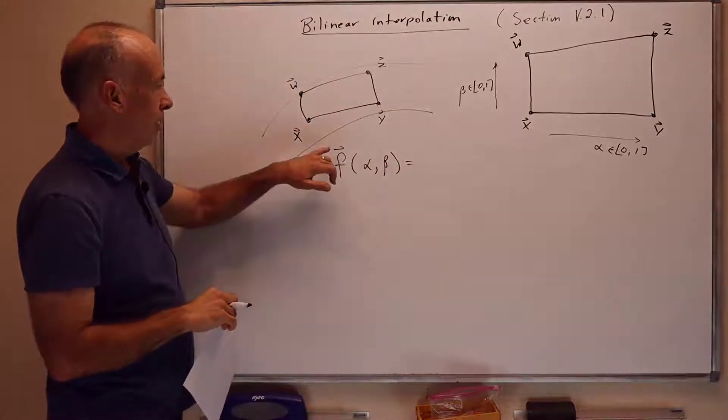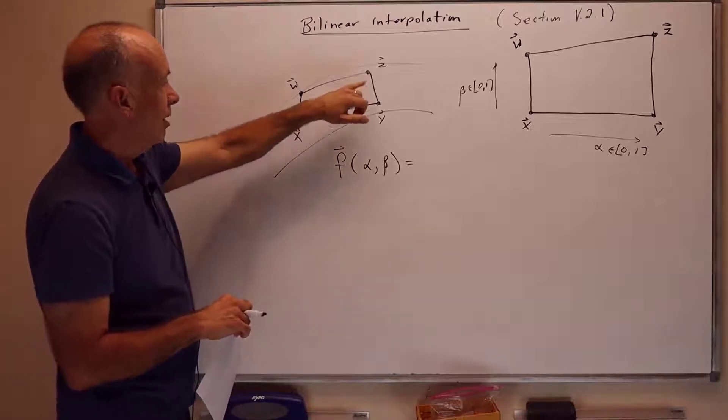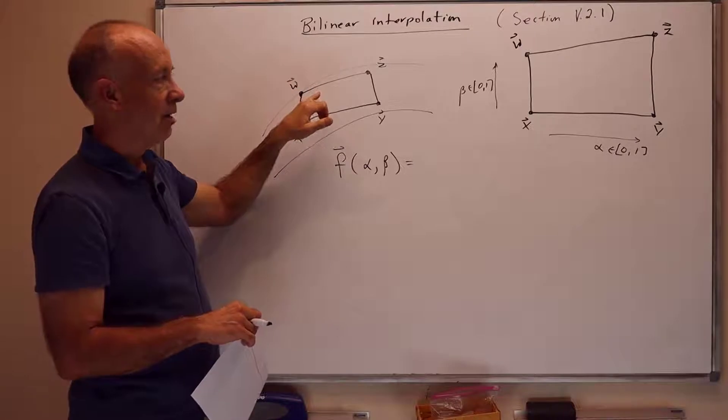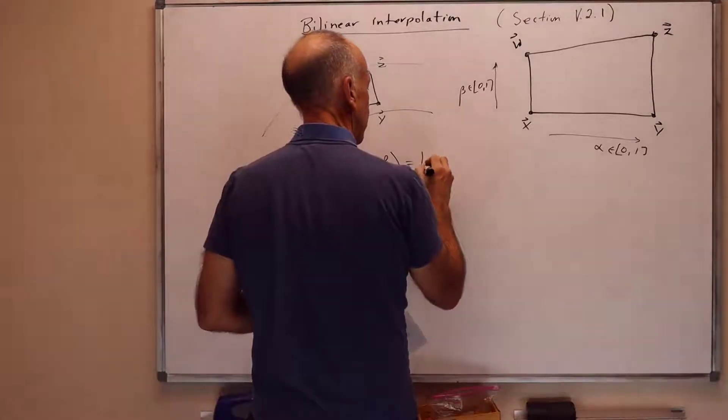And the formula for f of alpha beta, it's going to be... Oh, so I should mention f is a vector value function. x, y, z, and w sit in some space r^s for some dimension s. And likewise the values of f do. And we're going to obtain it by some repeated LERPing.